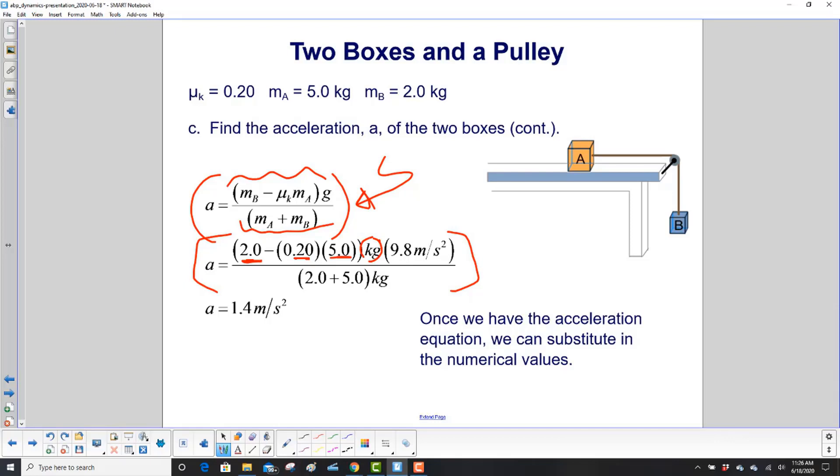And there's your kilograms. Then you have your acceleration G due to gravity on the right. And then on the bottom, we add the two masses and we have kilograms again. And you can note that the kilograms cancel out. And we get an acceleration of 1.4 meters per second squared.